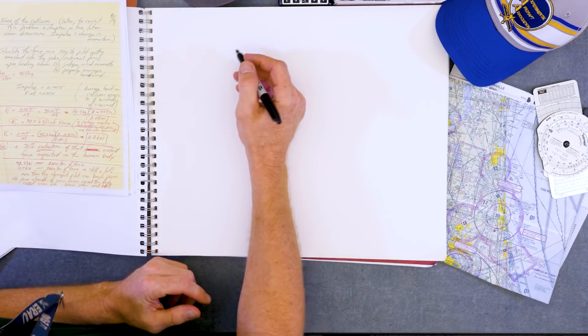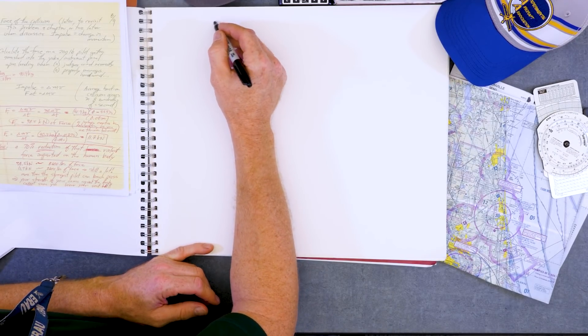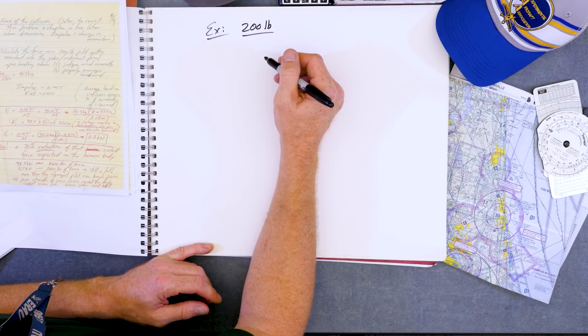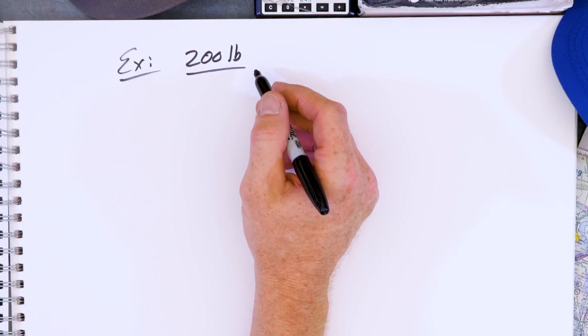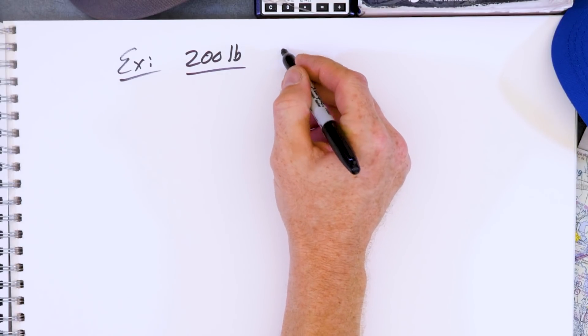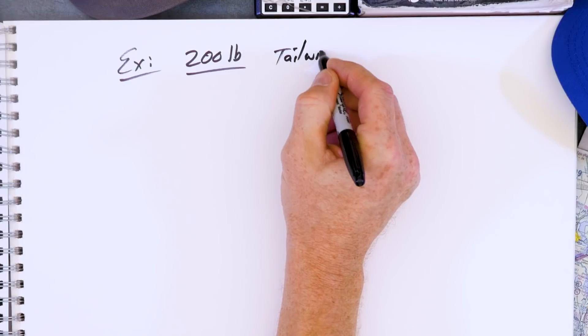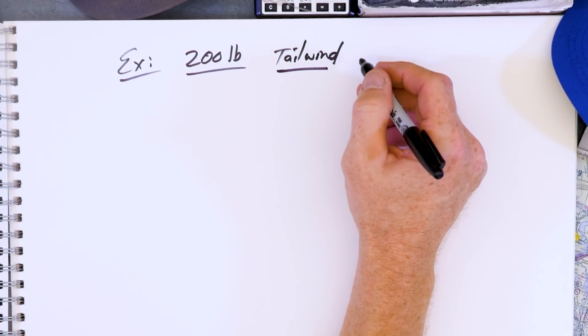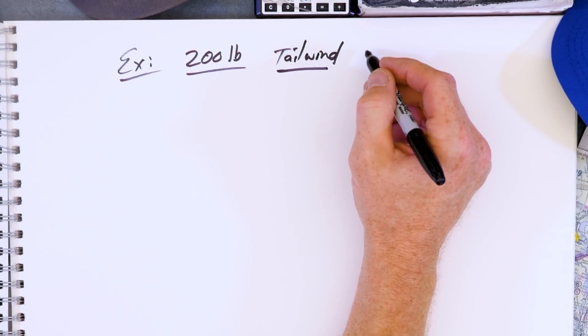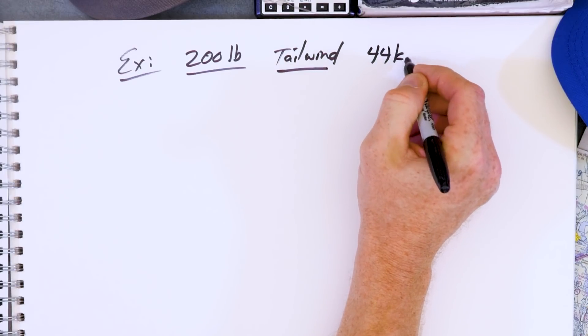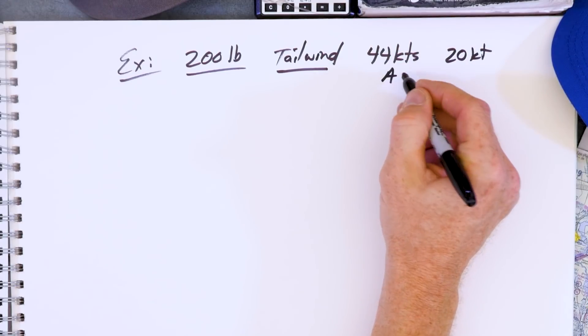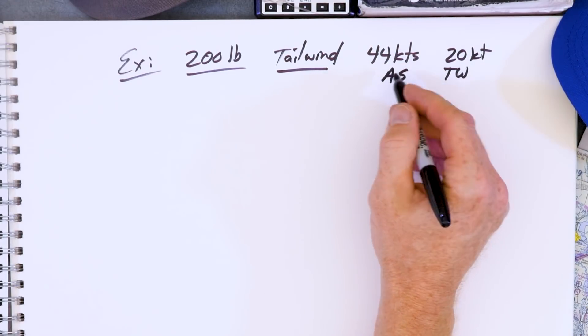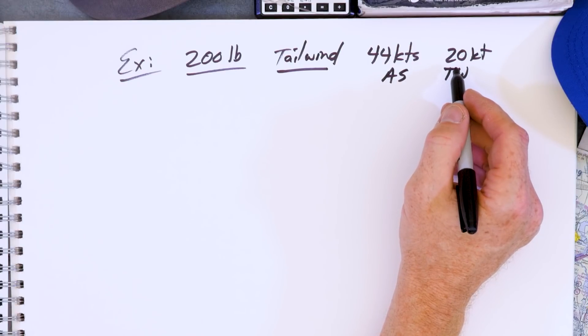Let's take a force on a 200 pound pilot. And we're going to use the speeds that we used in our last example, when the pilot does this incorrectly and has a tailwind. And if you look back at video number four, we calculated 44 knots airspeed with a 20 knot tailwind. This is airspeed and tailwind. That gave us a 64 knot ground speed, which we calculated as 33.9 meters per second.